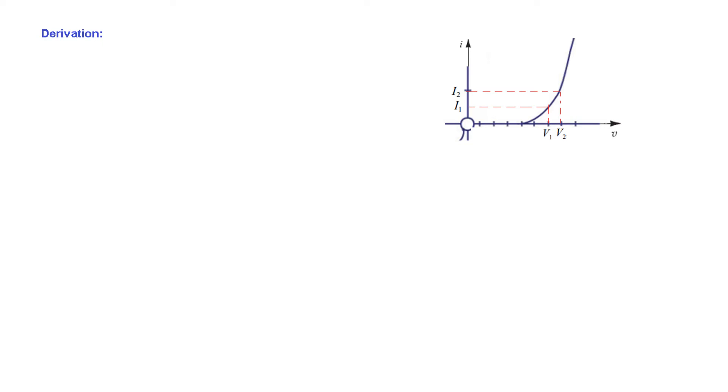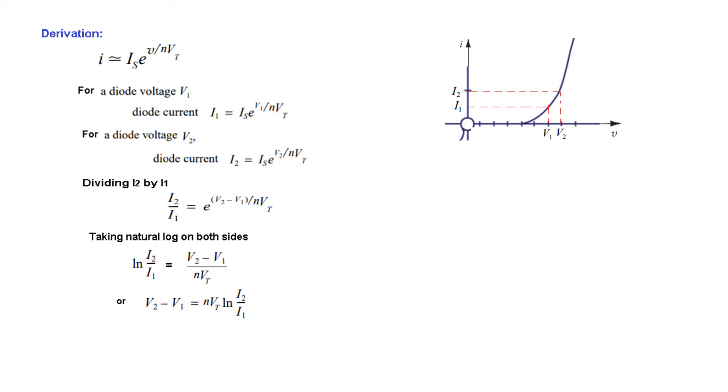Now we will do some derivation. For diode voltage V1, the diode current I1 = Is*e^(V1/nVt). Similarly for V2, diode current I2 = Is*e^(V2/nVt). When we divide I2 over I1, Is gets cancelled. Taking natural log on both sides: ln(I2/I1) = (V2-V1)/nVt. From here we can find that V2 minus V1 equals nVt ln(I2/I1).